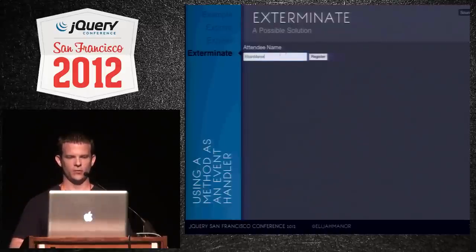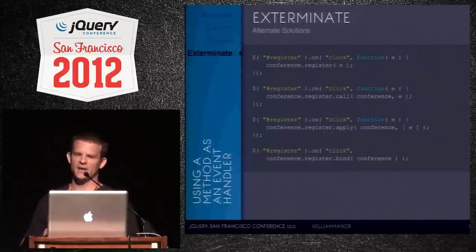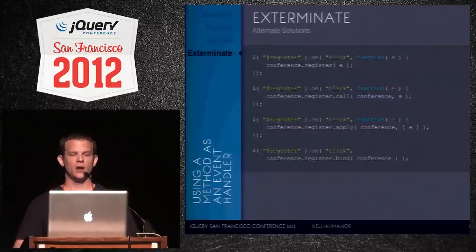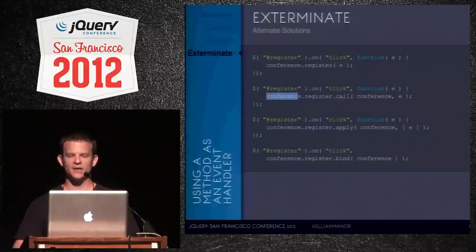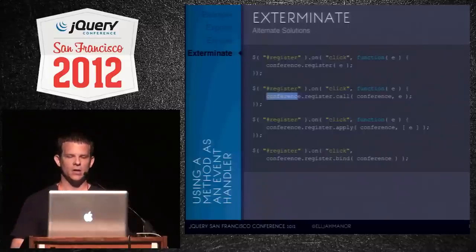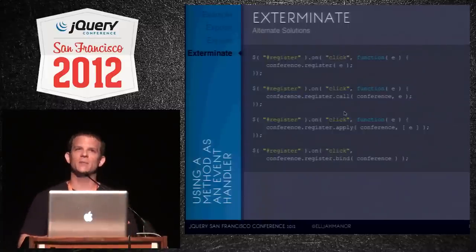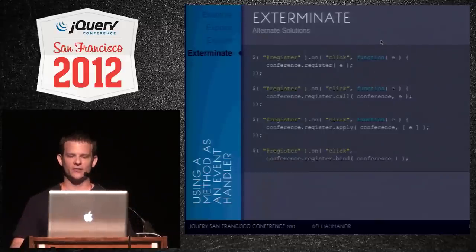There are other ways to fix this. You could use an anonymous callback that calls conference.register(event) directly. You could use the .call() or .apply() methods to control the 'this' context. You could also use the ECMAScript 5 .bind() method — though not all browsers support it, so you might need an ES5 shim. jQuery.proxy was added because it was such a common industry problem and provides a convenient solution.